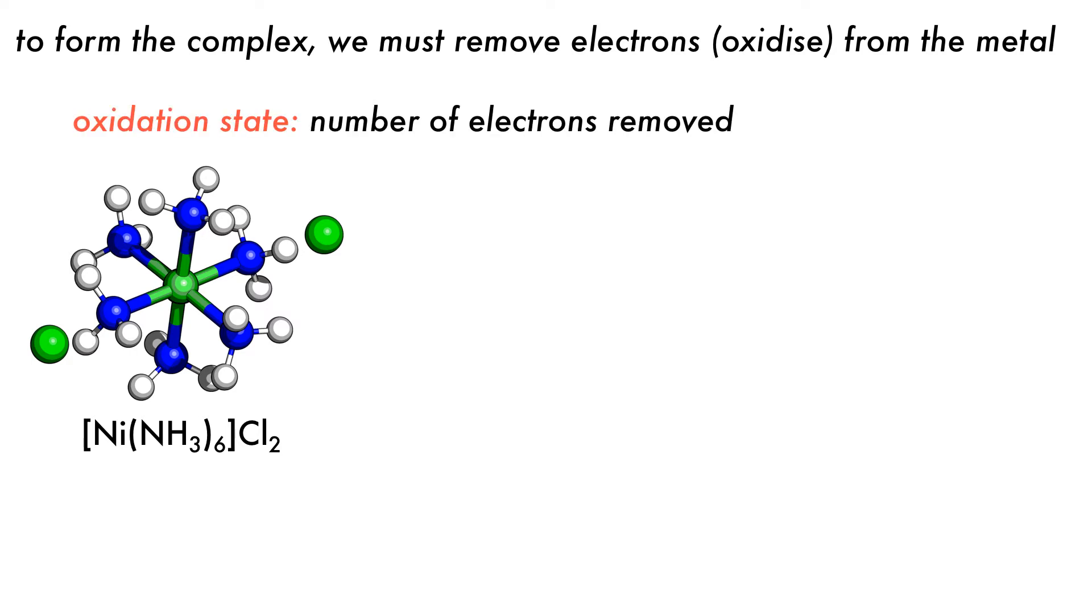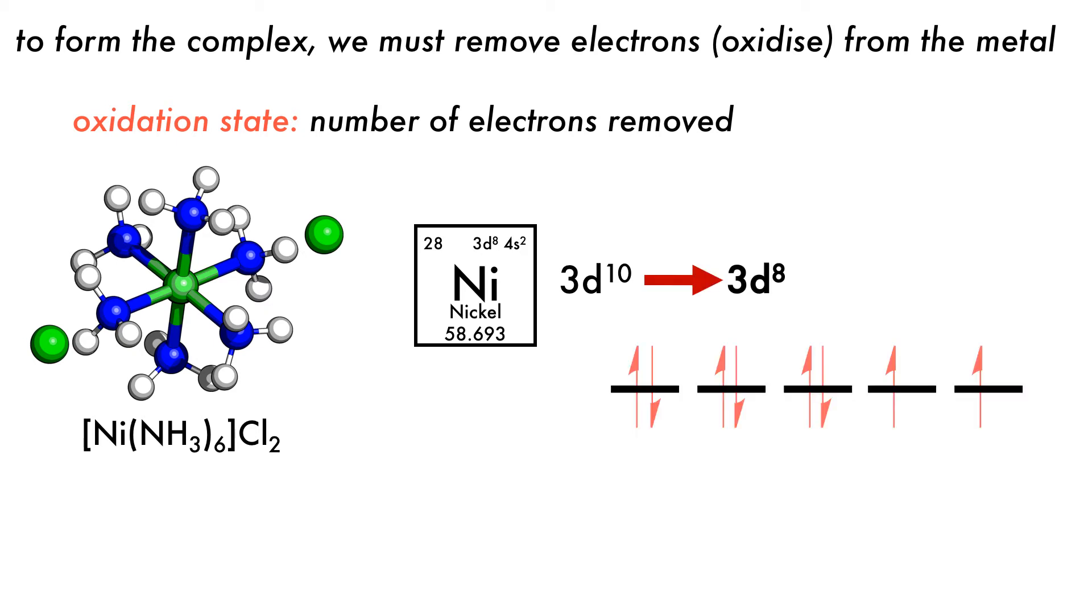If we take this hexamine-nickel-2-chloride complex, we know that the oxidation state of the nickel is 2 from the name. To find the electronic configuration of nickel, we subtract 2 electrons from the coordination complex elemental configuration of d10 to get d8.